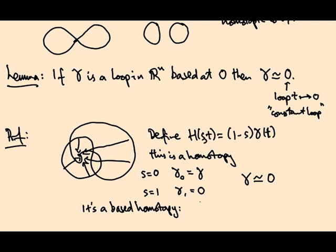And it's a based homotopy because H(s,0) is (1-s)×gamma(0). Gamma(0) is the origin, right? Gamma is based at the origin, so that's always zero. And H(s,1) similarly is something times the origin, so it gives me the origin again. So it's based at the origin.